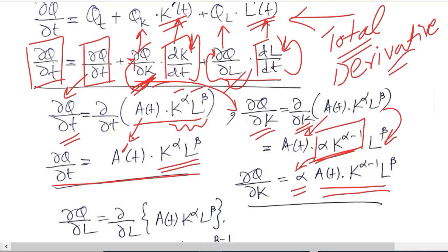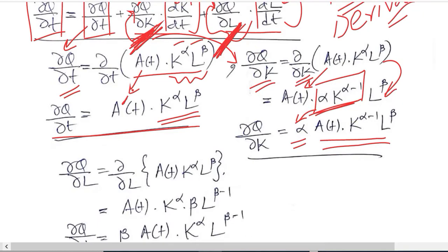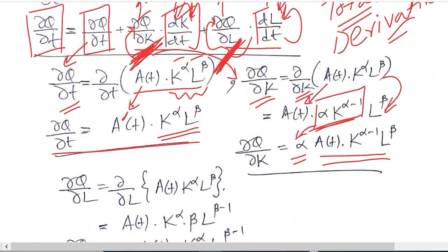Similar to it is this term. So I am going to use this term and I will come to the other two terms, dk over dt and dl over dt afterwards. But since these two terms are similar, this is why I am going to solve for delta Q over delta L. This is it.